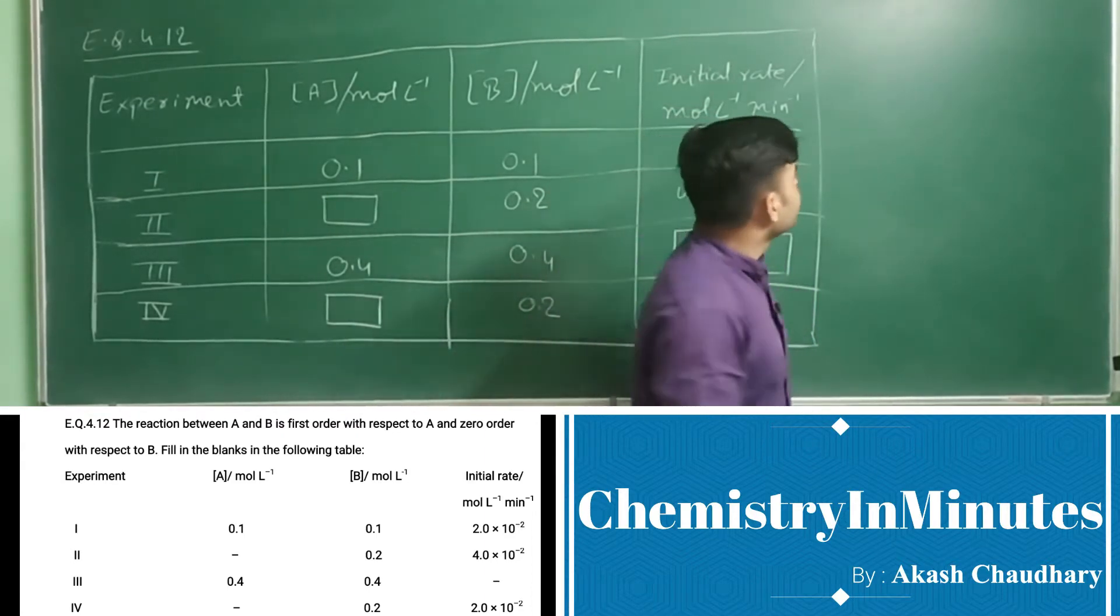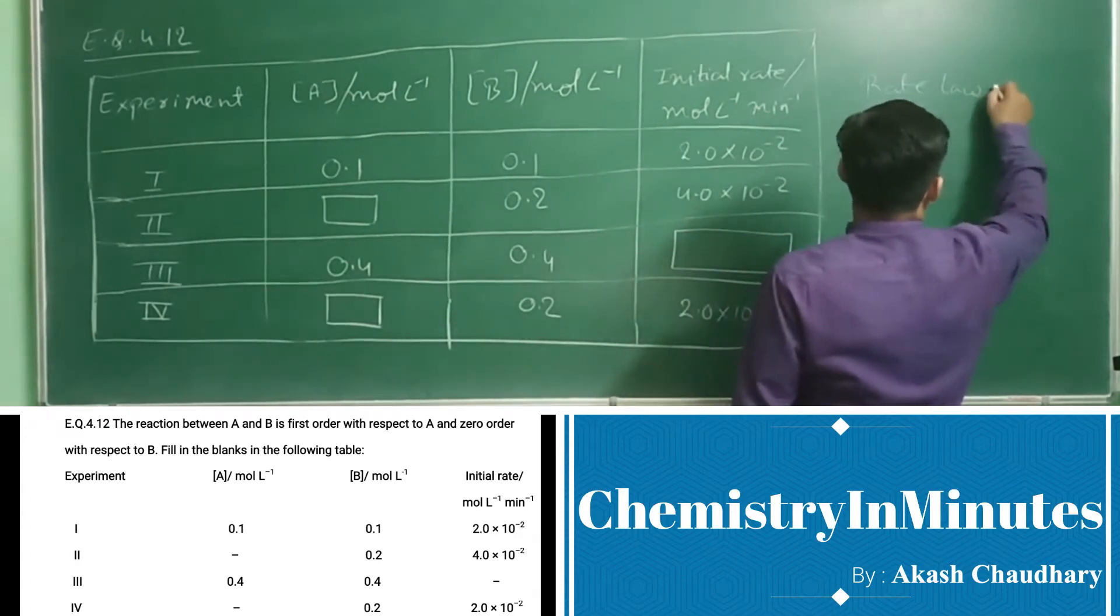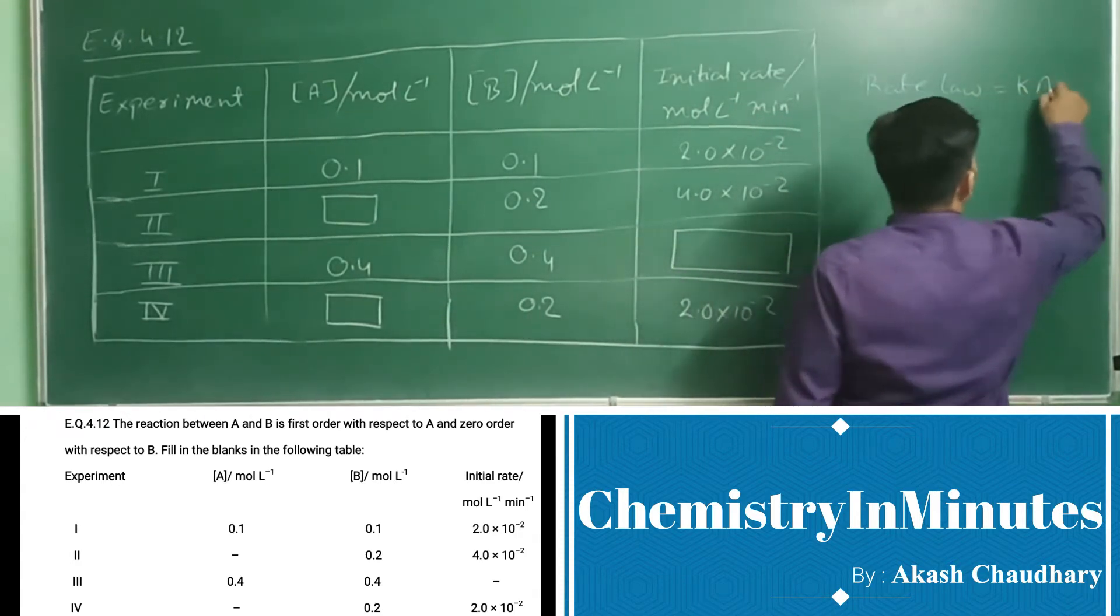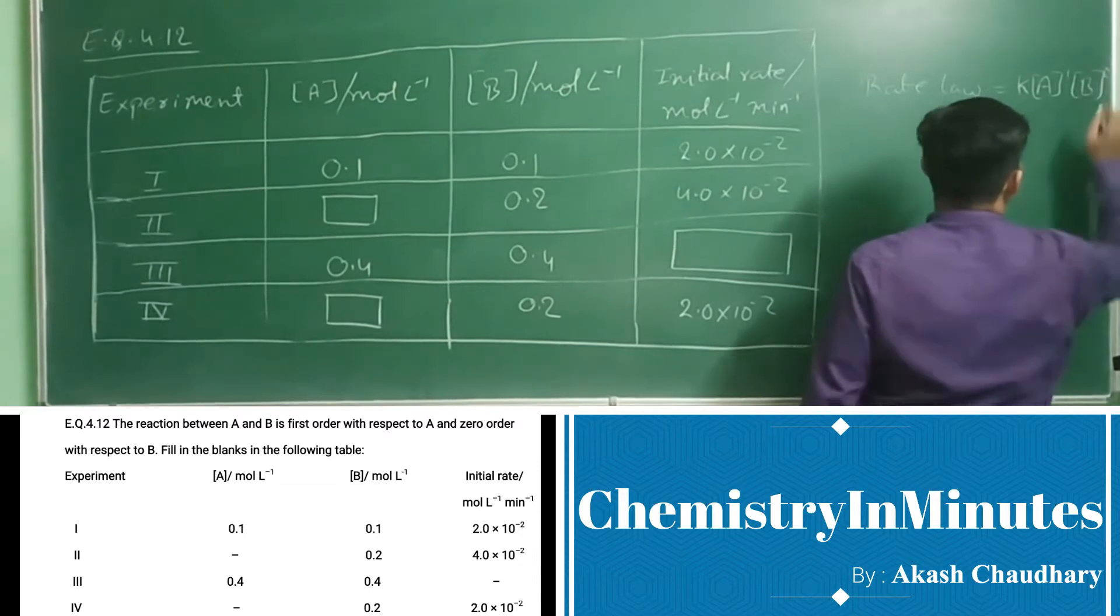So the rate law can be written as K times concentration of A to the power 1 and concentration of B to the power 0.